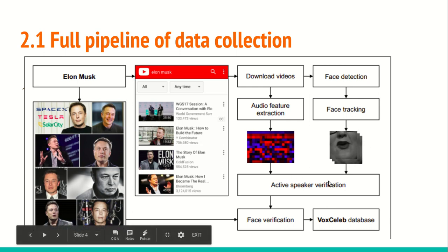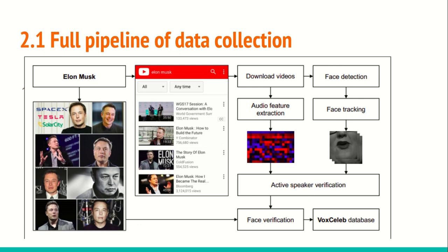Once they do face tracking, they do something called active speaker verification, where they verify whether the person moving their lips in the video stream matches the audio that is already there. It's like verifying who is speaking in the video, which corresponds to the audio. Then they do face verification and get the selected data. You can then identify where the target speaker's face appears across all tracks and add that data to VoxCeleb.